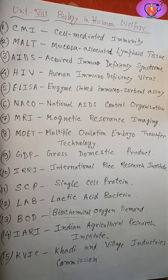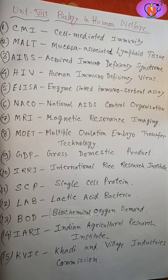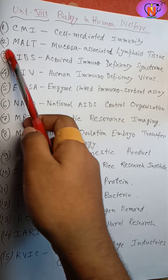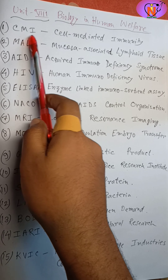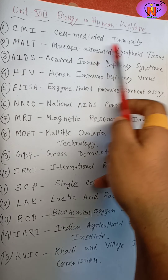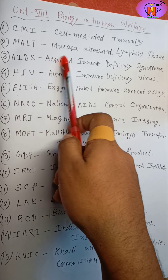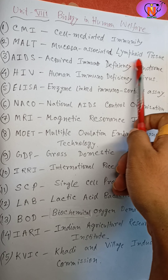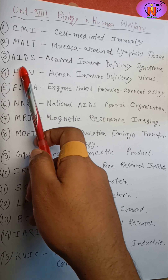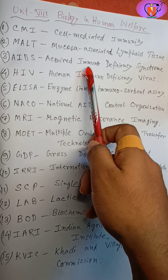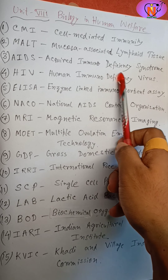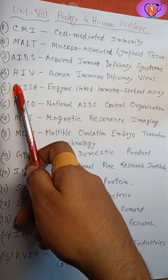Hello friends, welcome back to our channel. Today we are going to discuss the most important abbreviations of Unit 8: Biology in Human Welfare. Let's start. CMI: Cell Mediated Immunity. MALT: Mucosa Associated Lymphoid Tissue. AIDS: Acquired Immunodeficiency Syndrome. HIV: Human Immunodeficiency Virus.